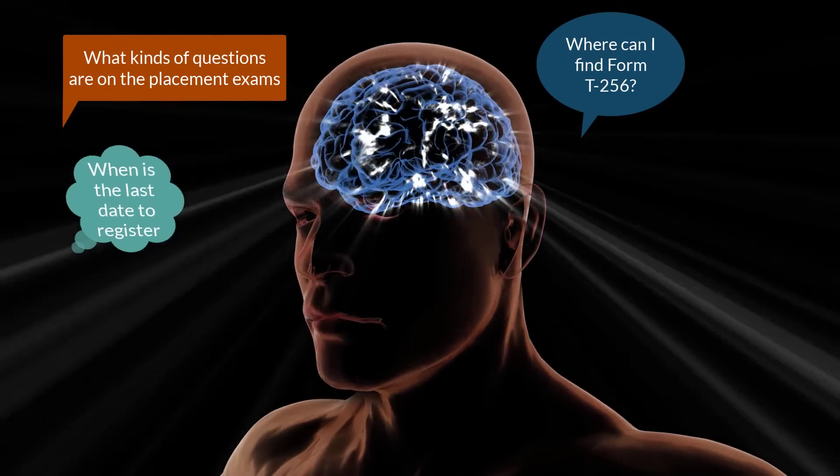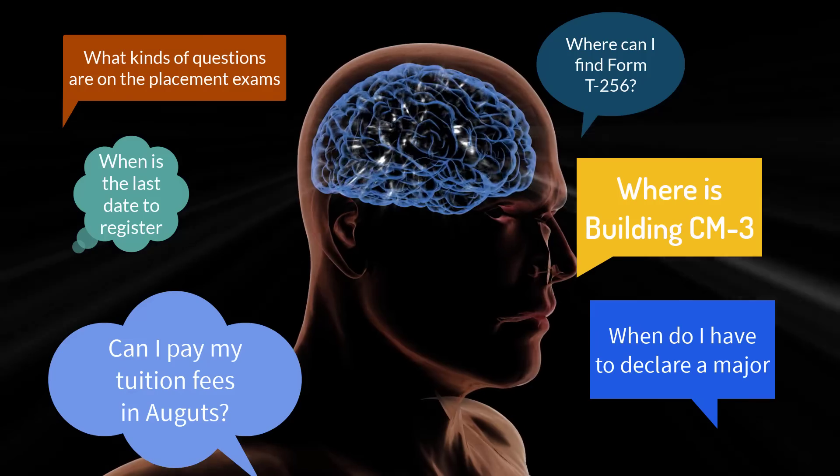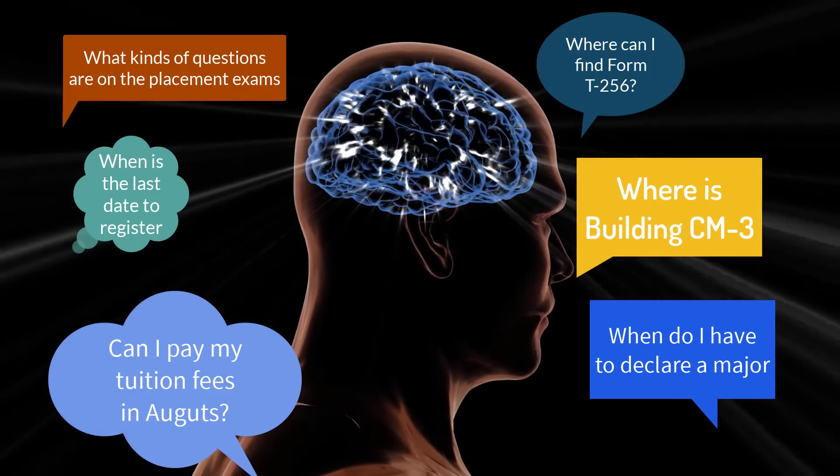Chatbots are available widely. For example, the World Health Organization provides something called Health Alert, and Kia, the car maker, provides something called Kian to answer questions about their cars. The university partnered with an education technology company specializing in conversational AI technology to produce a system called Pounce. Pounce communicated with students via smart text messages, and many of the queries revolved around placement exams, class registration, and financial aid applications — pieces of information students were unable to find.